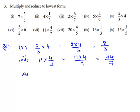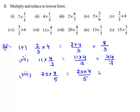Now let us move on to the eighth bit: 20 times 4 by 5. Let us multiply the numerators and denominators respectively. 20 times 4 divided by 5 gives 80 by 5. Since 5 goes into 80 sixteen times, the product of 20 times 4 by 5 is 16.